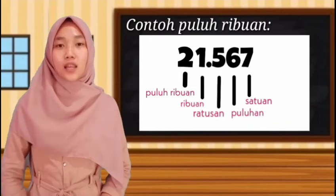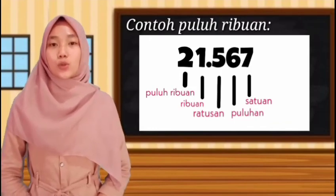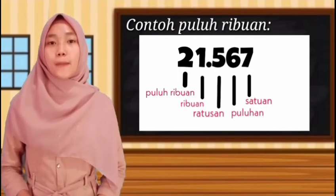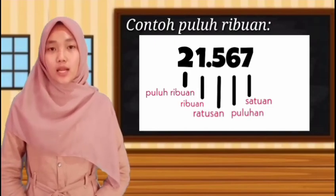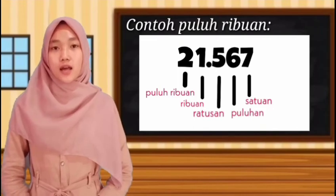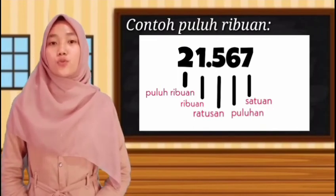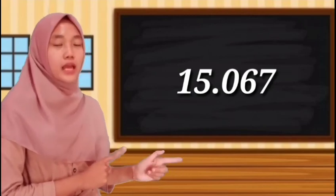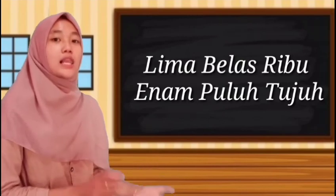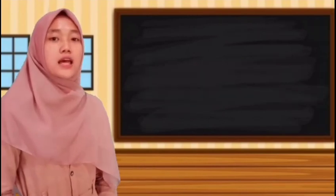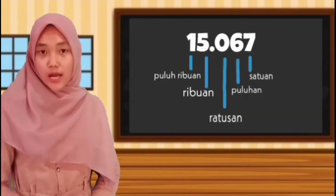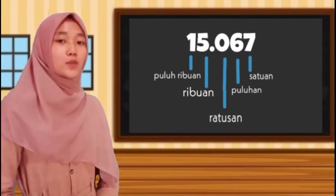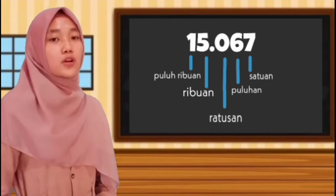Contoh yang kedua yaitu bilangan puluhan ribuan, seperti 21.567. Sama seperti yang pertama, kita cari yang paling belakang: tujuh sebagai satuan, enam sebagai puluhan, lima sebagai ratusan, satu sebagai ribuan, dan dua sebagai puluh ribuan. Contoh ketiga dibaca 15.067: tujuh sebagai satuan, enam sebagai puluhan, nol sebagai ratusan, lima sebagai ribuan, dan satu sebagai puluh ribuan. Itu yang termasuk ke dalam nilai tempat.